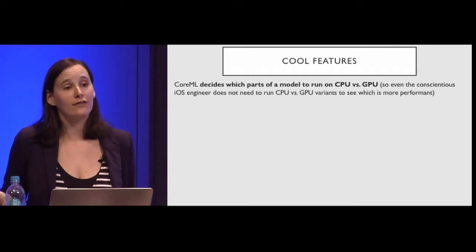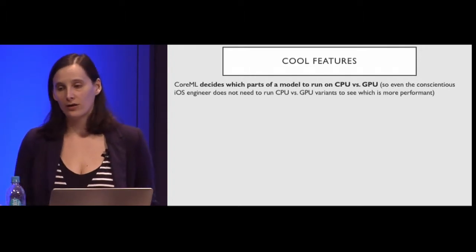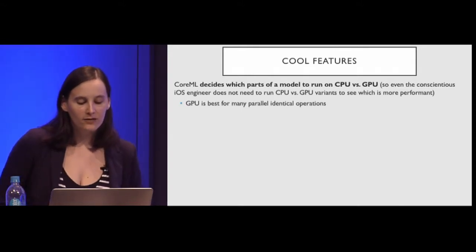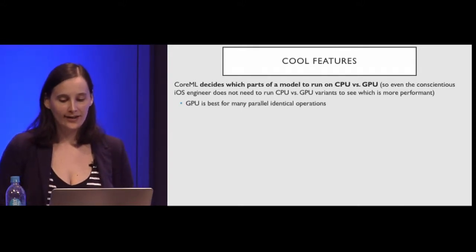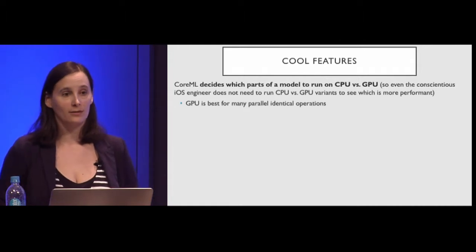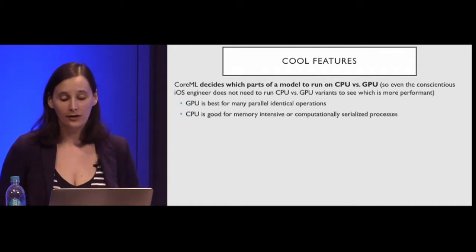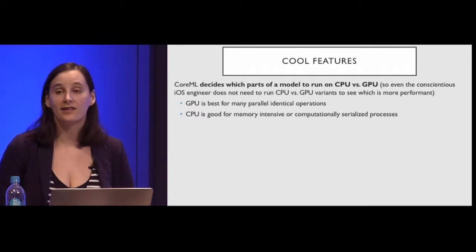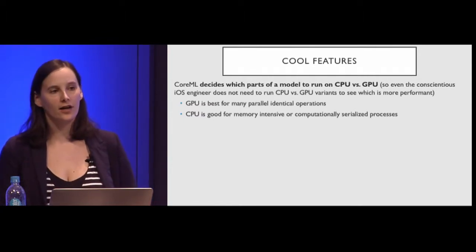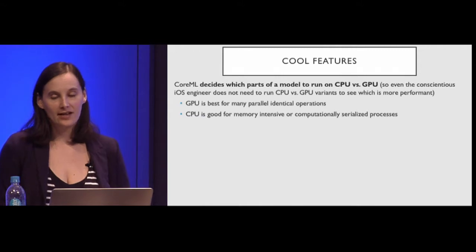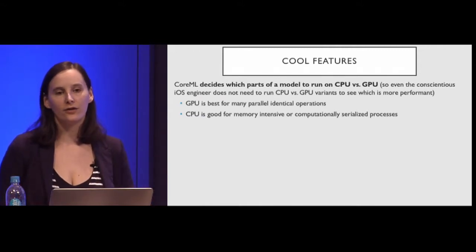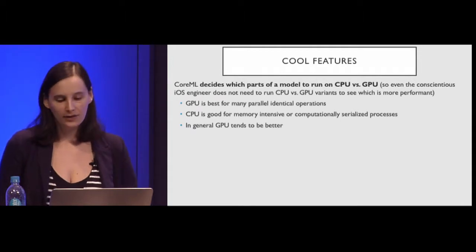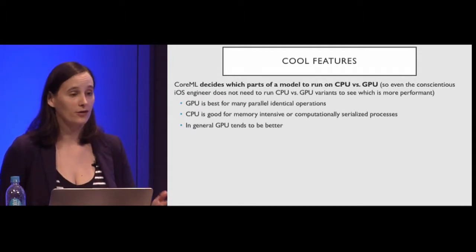Now Apple is just going to take care of it, saying 'trust us, we're giving you what's good for the hardware.' As a rule of thumb, GPU tends to be best for many parallel identical operations, which is what most machine learning models are. CPU can be good for memory-intensive or computationally serialized processes. Now that Apple has handled the performance balancing, you don't need to know more than that.